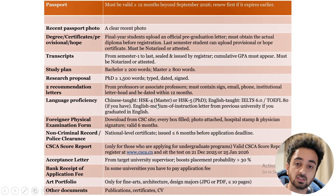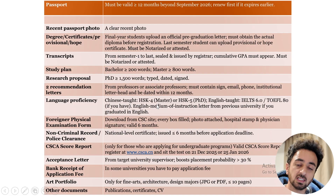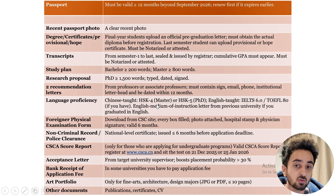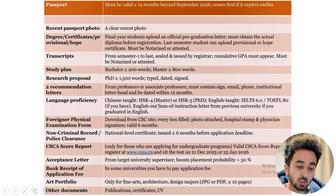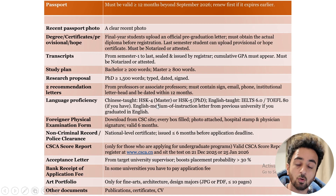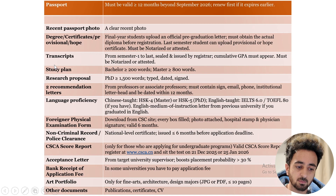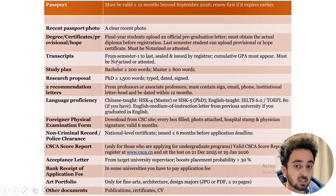Documents must be notarized and attested — but this means simple notarization only. Just go to a high-ranking officer or an educated person in your area and get a stamp. You do not need attestation from your higher education department or similar bodies. Simple attestation of your academic documents — degree certificate and transcript — is sufficient for CSC scholarship.